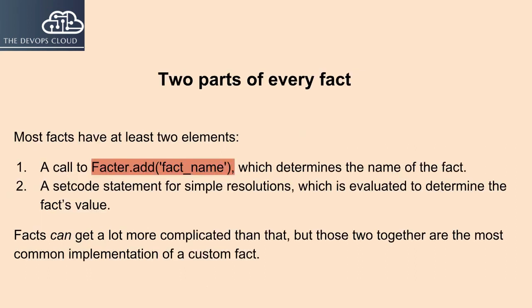To create a custom fact you usually need two parts, and most facts have at least two elements: a call to Facter.add with the fact name, which determines the name of the fact, and a setcode statement for simple resolutions, which is evaluated to determine the fact's value. Facts can get a lot more complicated than that, but those two together are the most common implementation of a custom fact.